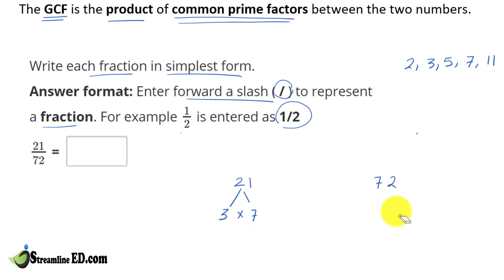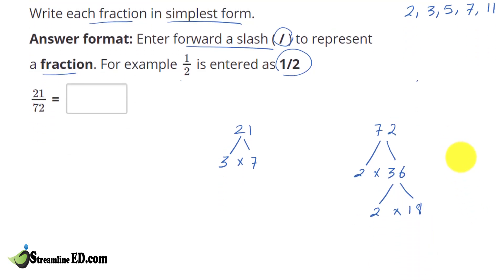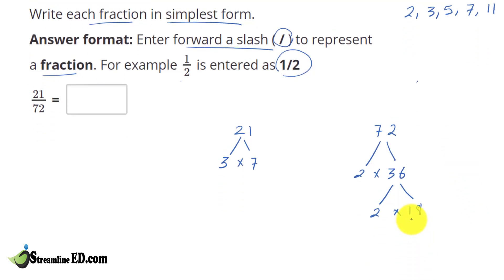72. Let's look at 72. We know 72 is an even number, so that can be divided by 2. So we have 2 times 36. We have our prime number right there. And 36 is an even number, so we can divide it by 2 again, 2 times 18, gives us 36. Now 18 is an even number again, so we can divide it by 2 again, 2 times 9. And then 9 is divided by 3, so 3 times 3. And now we have all the prime numbers that make up 72. And here we have prime numbers that make up 21.